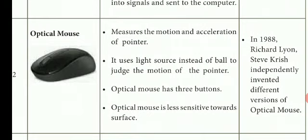The optical mouse measures the motion and acceleration of the pointer using light rather than a mechanical ball. In 1988, Richard and Steve Krish independently invented different versions of the optical mouse.